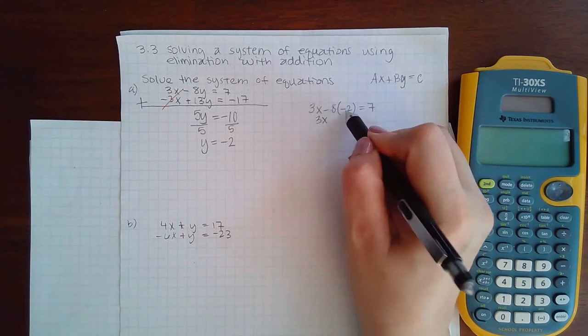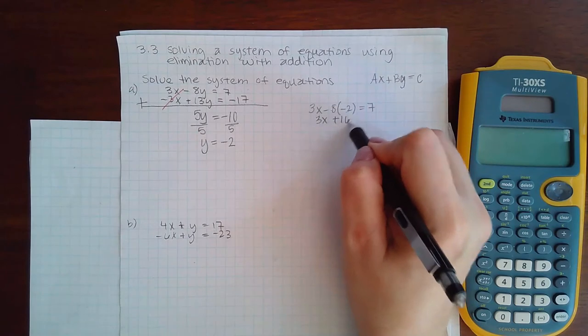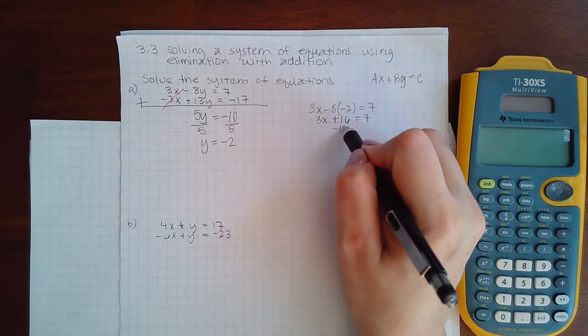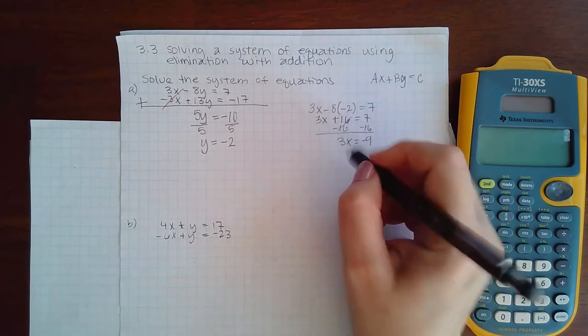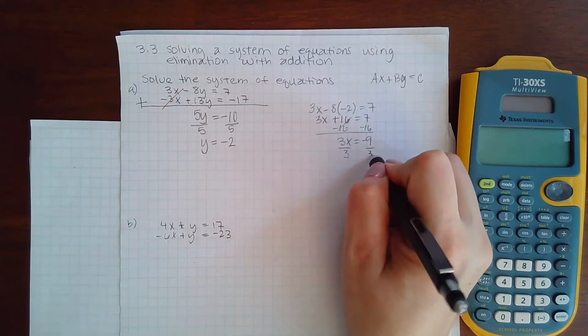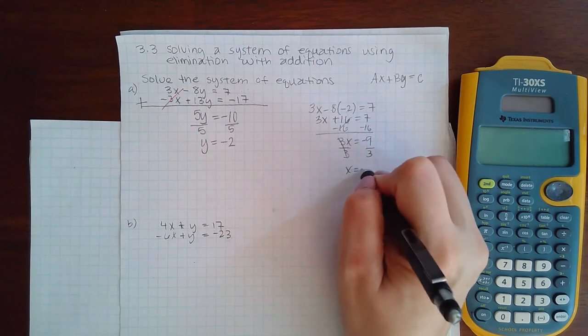Here I have -8 times -2, which is 16. Subtracting 16 from both sides gives 3x = -9. Dividing by 3 on both sides gives x = -3.